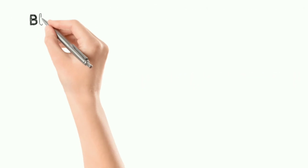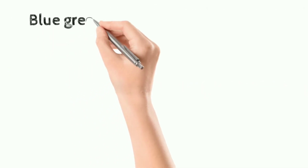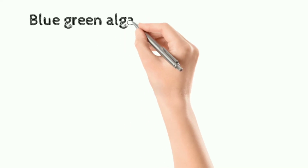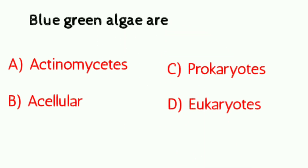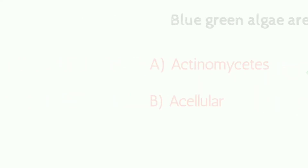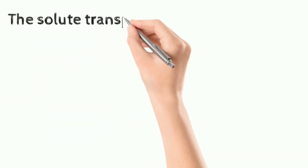Question number three: blue-green algae are — a) actinomycetes, b) acellular, c) prokaryotes, d) eukaryotes. Correct answer is prokaryotes.